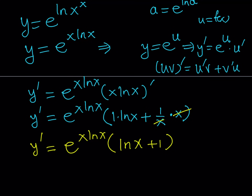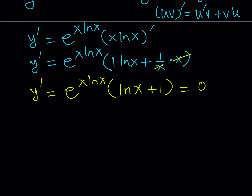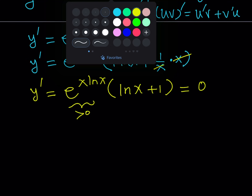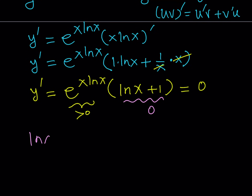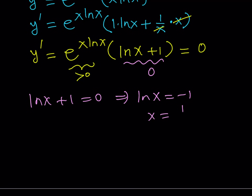To find the critical points, I set the derivative equal to 0. Now, e to the power x ln x is always greater than 0 for real x, so it can never equal 0. So I just need to focus on ln x plus 1 equals 0, which gives ln x equals negative 1, and therefore x equals 1 over e. So the critical value is x equals 1 over e.